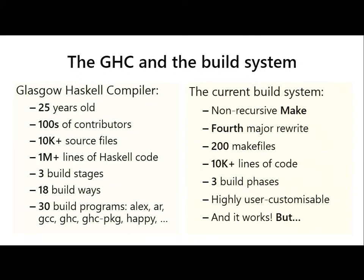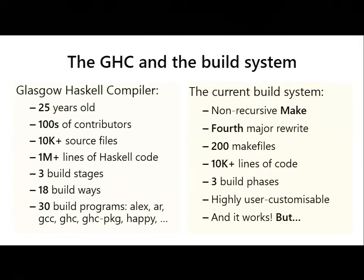We also build GHC in multiple ways: with profiling, without profiling, with debug, without debug, et cetera. There are 18 possible build ways that the current build system supports. And we use 30 programs in the build process — compilers like GCC and GHC, some parser generators like Alex and Happy, and many others.